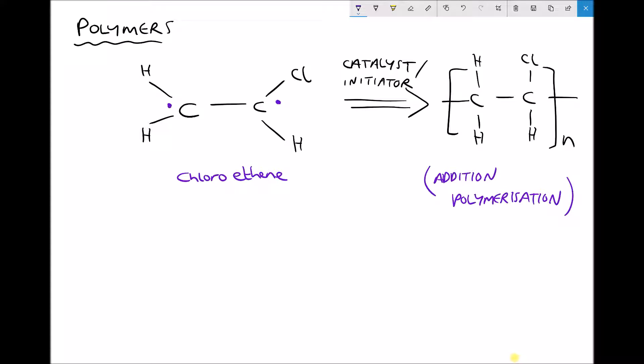So the initiator or the catalyst breaks those bonds and we get what we see on the right hand side which is our PVC polymer. This process of bond breaking and bond making will continue until the catalyst or the initiator is no longer available.